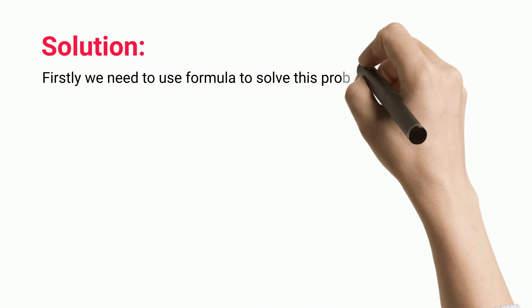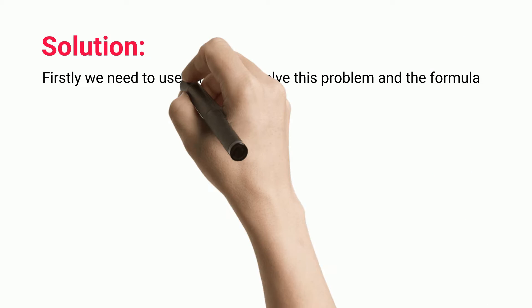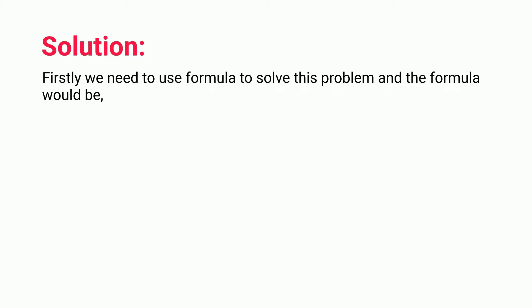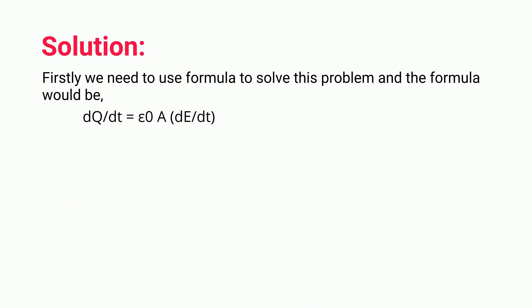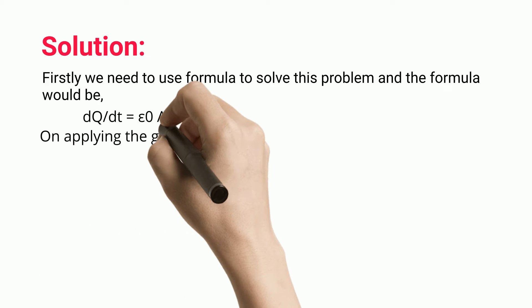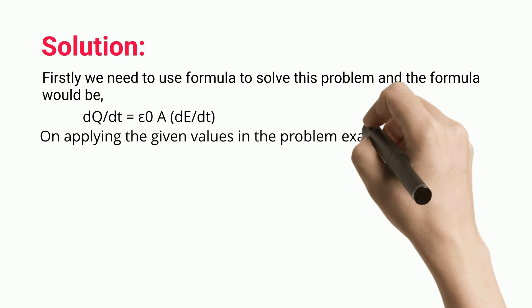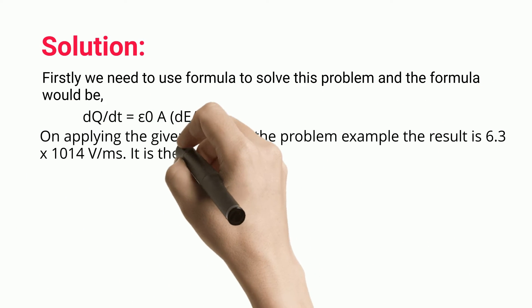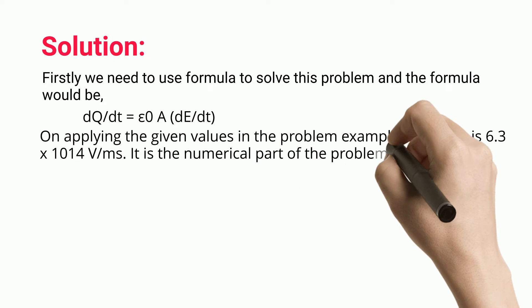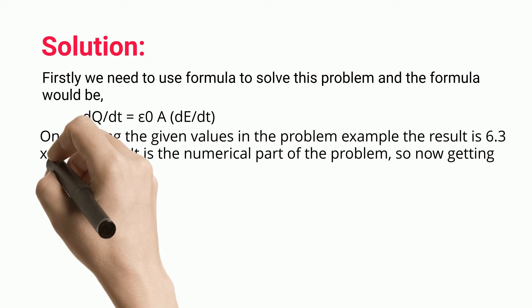Solution: We use the formula dQ/dt = ε₀A · dE/dt. On applying the given values, the result is 6.3 × 10¹⁴ V/ms.